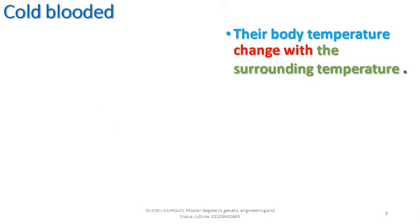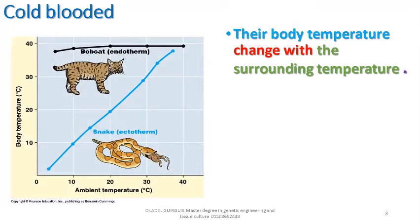Look at the graph. The snake body temperature changes with changing ambient or surrounding temperature. When the surrounding temperature on the x-axis increases from about 3 Celsius to about 37 Celsius, also the snake temperature increases with the same trend.